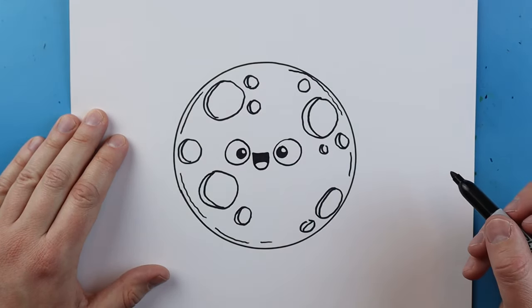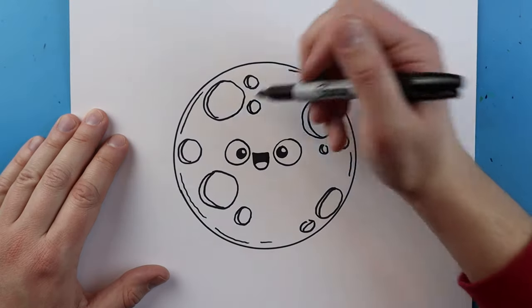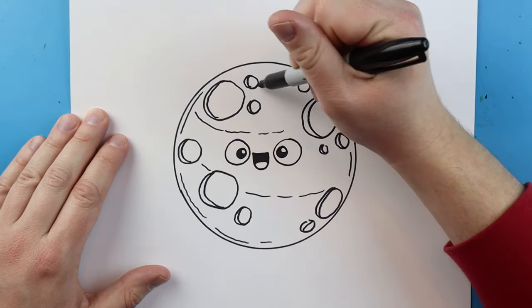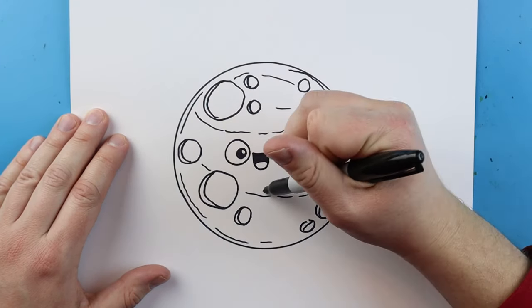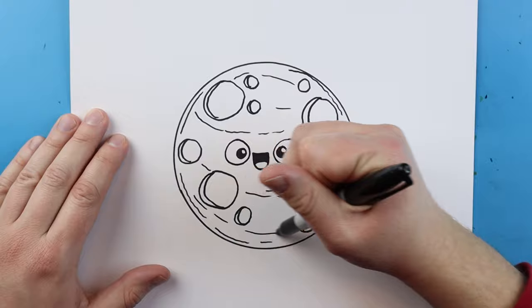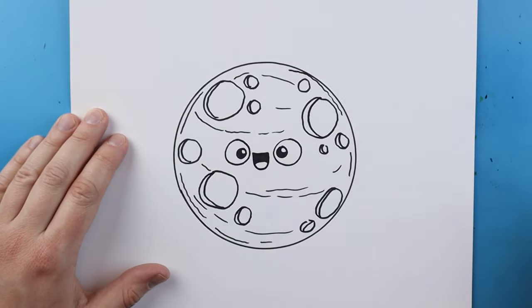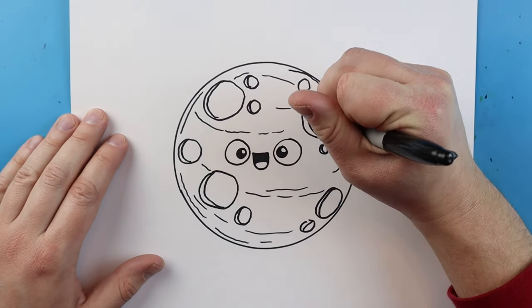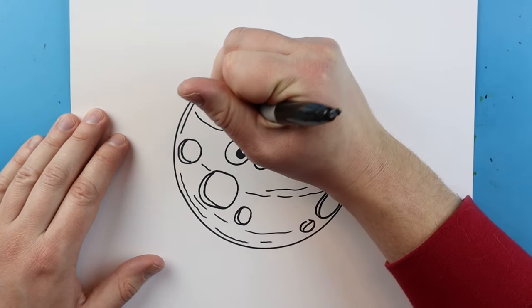And I'm also going to add some long kind of curvy broken lines kind of across our planet here, just to give it a little bit more detail. And even inside of here you can add a few more details inside these little circles.